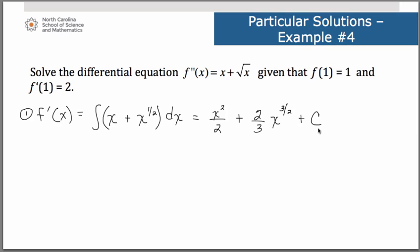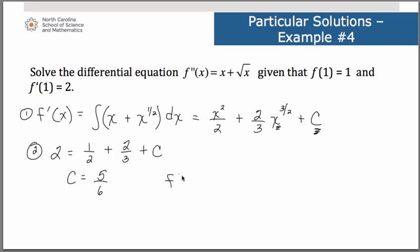Now let's figure out what this c value is — that's step two. We were told that f'(1) = 2, so our derivative value is 2 when x equals 1. We substitute x = 1: 2 = 1/2 + 2/3 + c. Solving that, we get c = 5/6. So what we have so far is that f'(x) = x²/2 + (2/3)x^(3/2) + 5/6. But now we have to take the antiderivative again to arrive back at our original function.